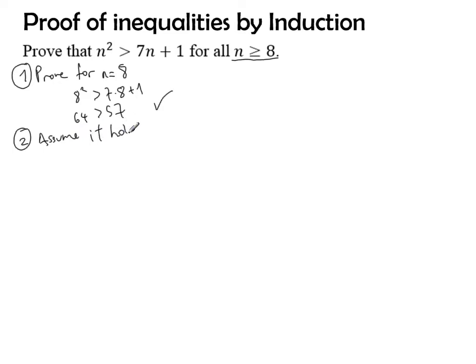Now I have to make the assumption. I assume that it holds for n equals k. k² is bigger than 7k plus 1.